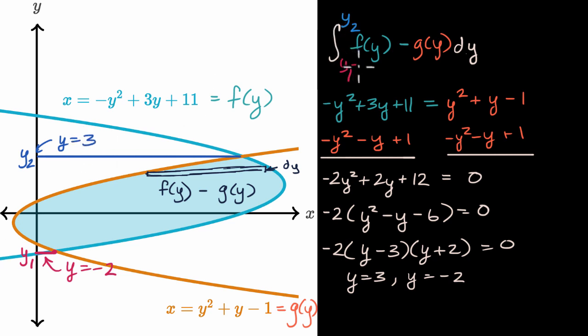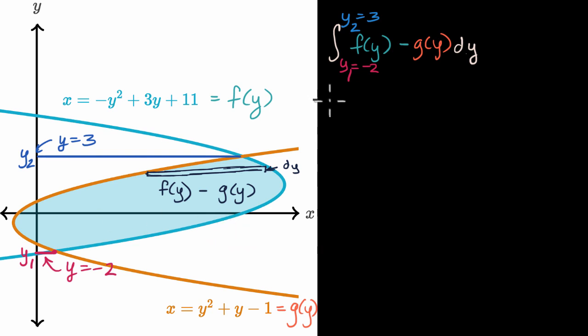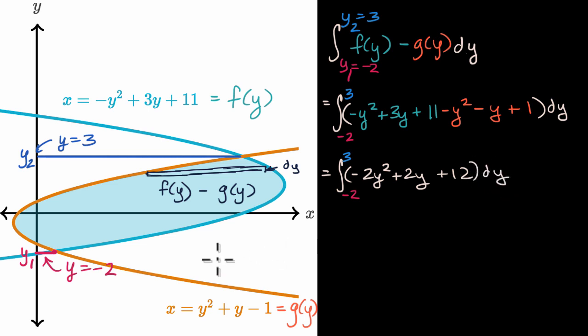Now we just have to evaluate this from -2 all the way until 3. This is equal to the integral from -2 to 3 of -y² + 3y + 11 minus all of this stuff. If we distribute a negative sign, it's -y² - y + 1, then we have dy. This equals the definite integral from -2 to 3 of -2y² + 2y + 12 dy.